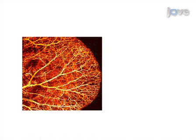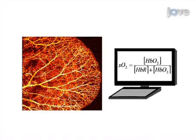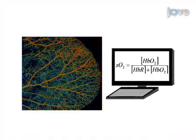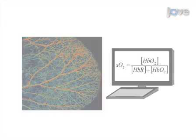Ultimately, the distributions of total oxygen concentration and oxygen saturation of hemoglobin are obtained through computation of the multi-wavelength experimental data.